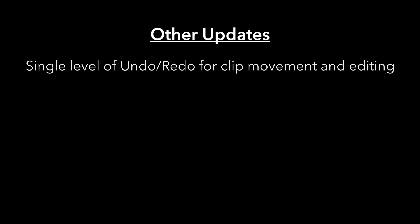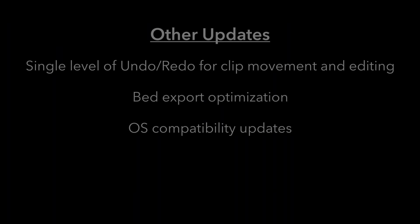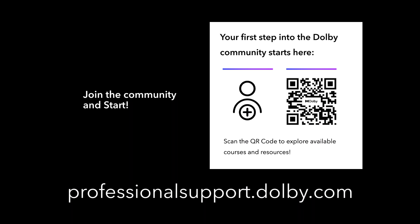Other updates in this release include a single level of undo/redo for all clip movement and editing functions, bed export optimization, and updated OS compatibility. For a complete list of updates in this version, refer to the release notes, user's guide, and keyboard shortcuts PDFs included with the installer. For more information on working in Dolby Atmos, visit the Dolby Atmos Knowledge Base and forums.